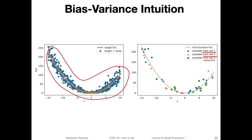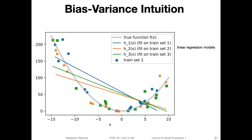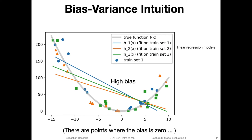Here I plotted linear regression models fit to each training set. The blue line is fit on training set one, the orange line on training set two, and the green line on training set three. This would be a case where we have a high-bias model, because for all three models we are very far off from the true target function. If we made predictions with these linear regression models, the predictions would obviously be very bad when predicting y values from x values.